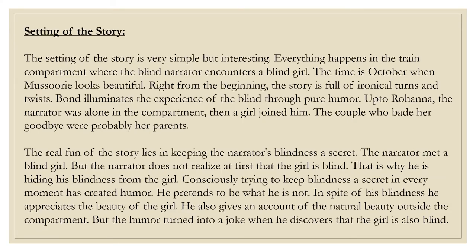Setting of the story: The story is very simple but interesting. Everything happens in the train compartment where the blind narrator encounters a blind girl. The time is October when Mussoorie looks beautiful. Right from the beginning of the story, it is full of ironical turns and twists.